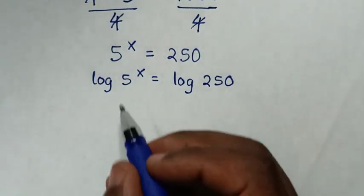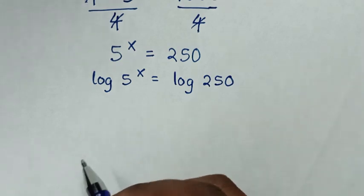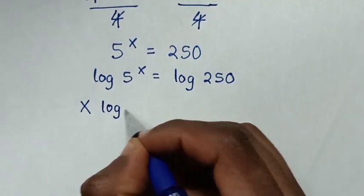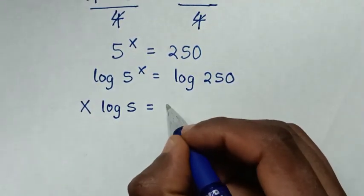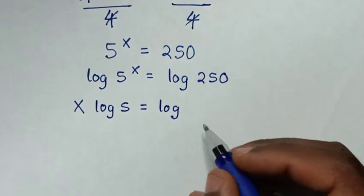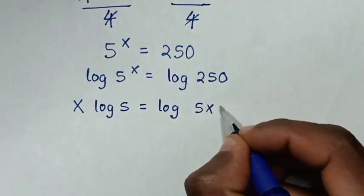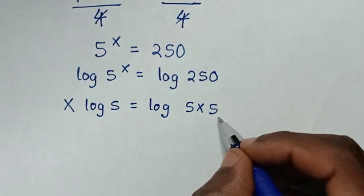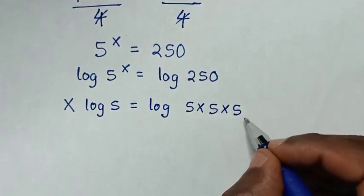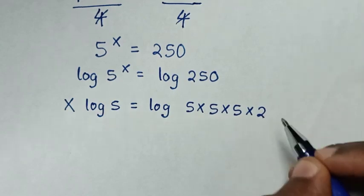Then in the next step, this power x will move to the base. So it will be x log of 5 is equal to log of 250. Now 250 is the same as 5 times 5, which is 25, then times 5 is 125, then times 2.